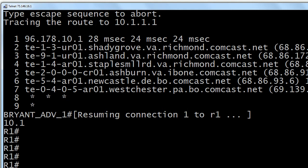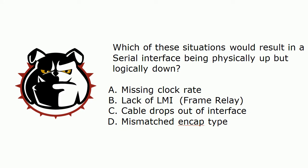This is something you need to know for the real world as well, because otherwise you'll have some bank vice president over your shoulder — like I did once — saying after about row 17, 'Is this supposed to be doing that?' Now for the next question: which of these situations would result in a serial interface being physically up but logically down? We've got a missing clock rate, a lack of LMI with frame relay, a cable dropping out of the interface, or a mismatched encap type.